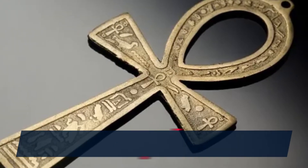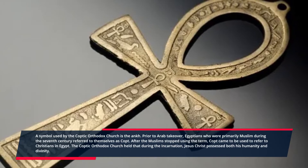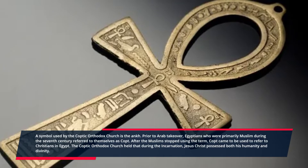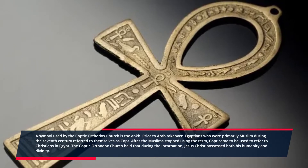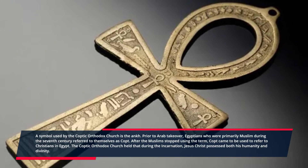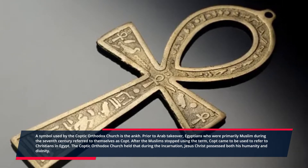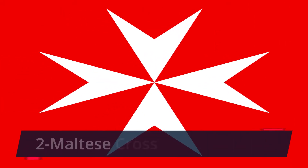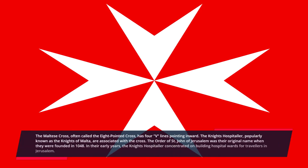The Ankh was used as a symbol by the Coptic Orthodox Church. Prior to Arab takeover, Egyptians — who were primarily Muslim during the 7th century — referred to themselves as Copts. After the Muslims stopped using the term, 'Copt' came to be used to refer to Christians in Egypt. The Coptic Orthodox Church held that during the Incarnation, Jesus Christ possessed both his humanity and divinity.